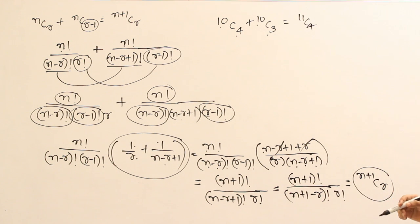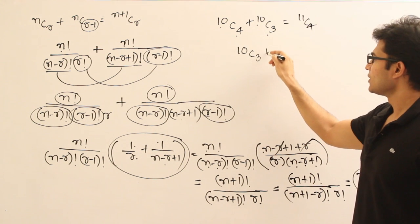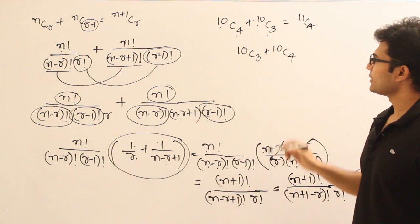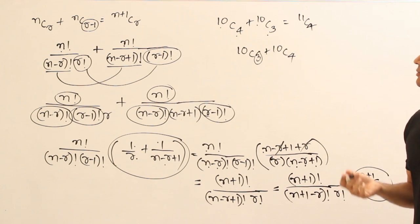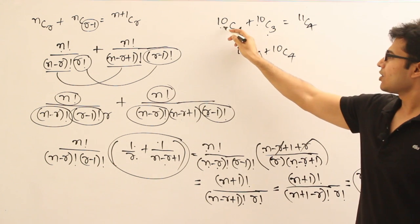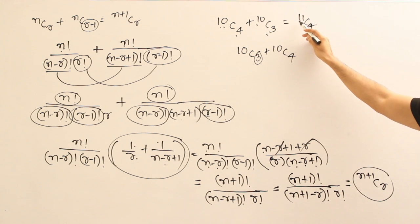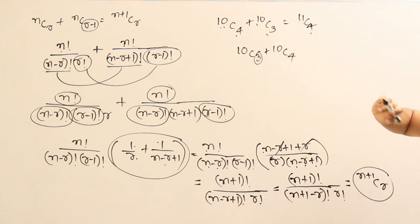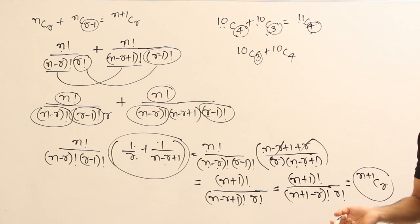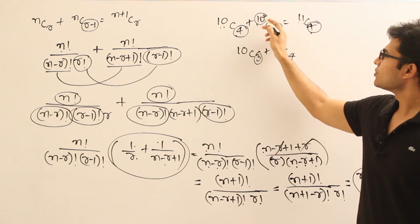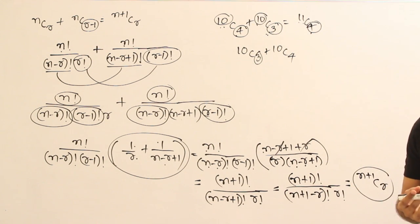Just be careful when identifying r. In the exam they might give you something like 10C3 + 10C4 — if you mistakenly treat 3 as r you'll go wrong. So remember carefully: nCr + nC(r-1) = (n+1)Cr. Among these two terms, the denominator that is larger determines r, and the numerator gets plus 1.